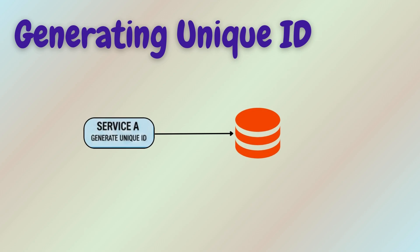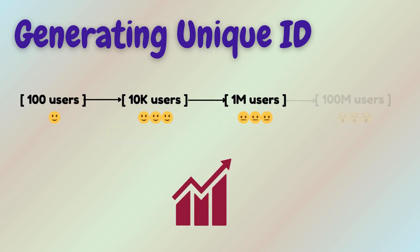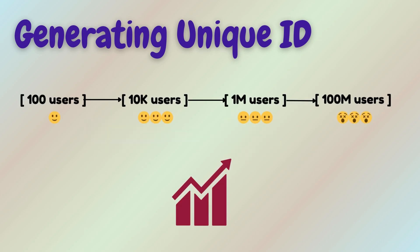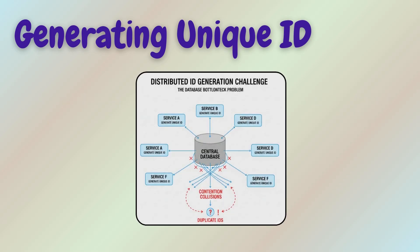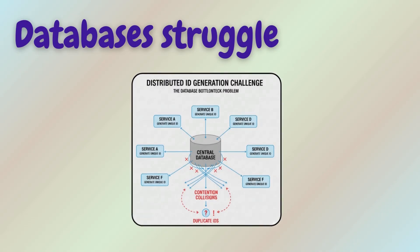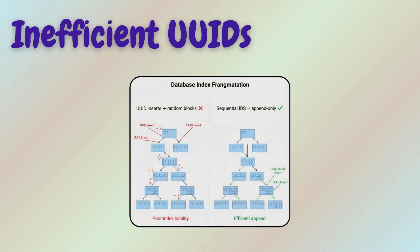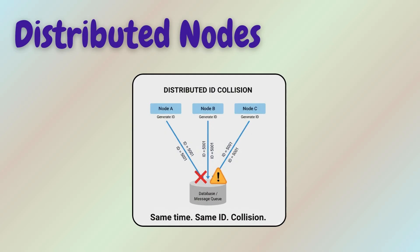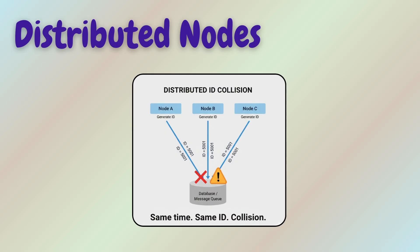Generating unique IDs sounds simple. But when your system grows from 100 users to 100 million users, generating unique IDs becomes a serious engineering challenge. Databases struggle, UUIDs become inefficient, and distributed nodes collide.